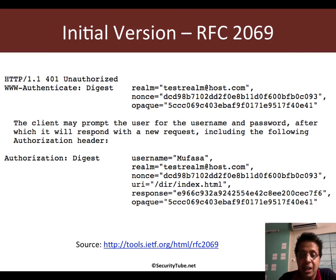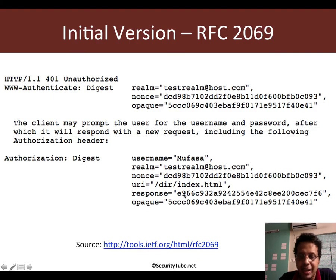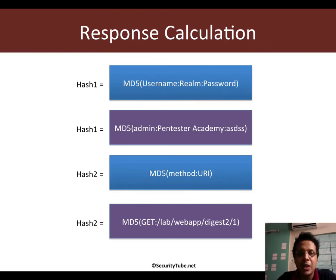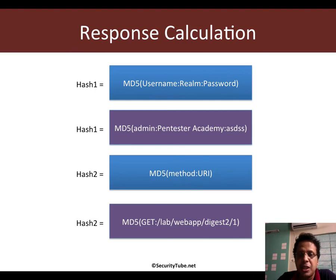Using a combination of quantities including your password and other things, your browser derives this response and sends it back. The server verifies it and then decides whether to allow you access to the resource or not. Now what I want to convey in this video is how this response is created. The response calculation, as complicated as it looks, is actually very simple. The hash is created using MD5, which is a well-known hashing algorithm.